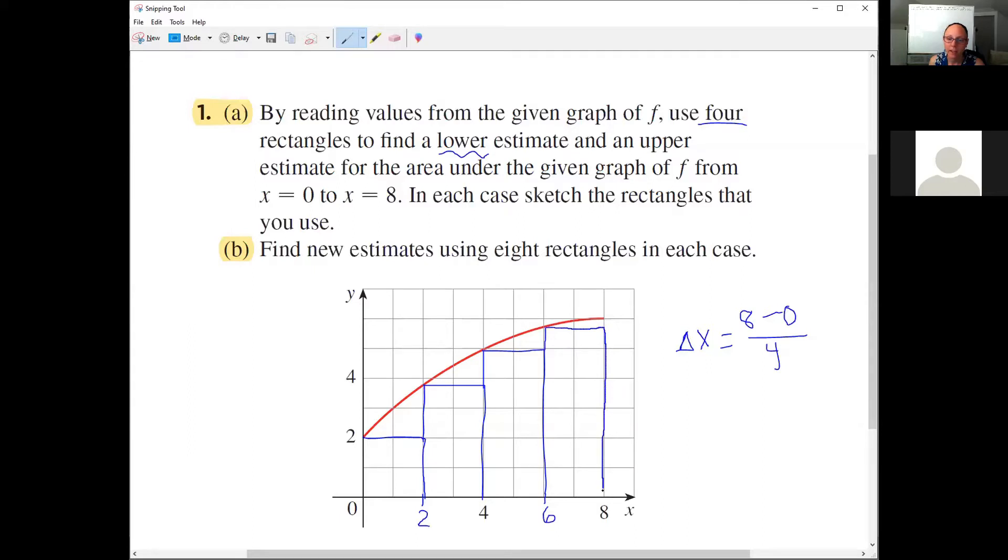So if I want a lower estimate, then I'm going to be estimating the areas of each of these boxes. Each of these rectangles has a width of two, and the height in this case I'm just going to have to do my best guess from looking at the graph. In this first box that's pretty easy - we can actually just count squares. It's four squares, but it's two high by two wide.